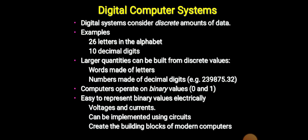Computers operate on binary values, 0s and 1s. Easy to represent binary values electrically: voltages and currents. These can be implemented using circuits, creating the building blocks of modern computers.